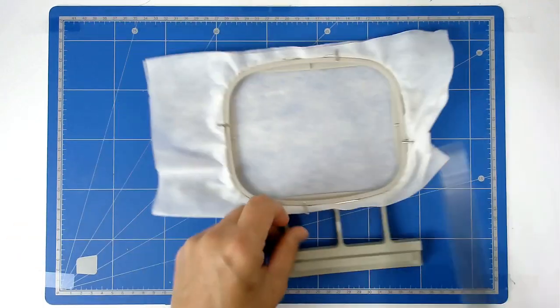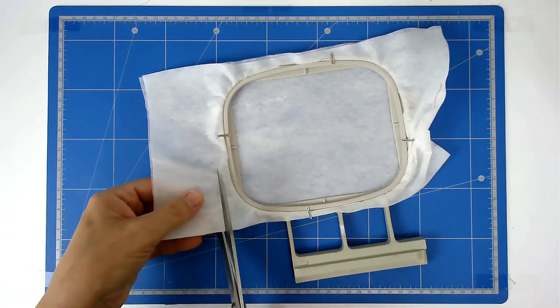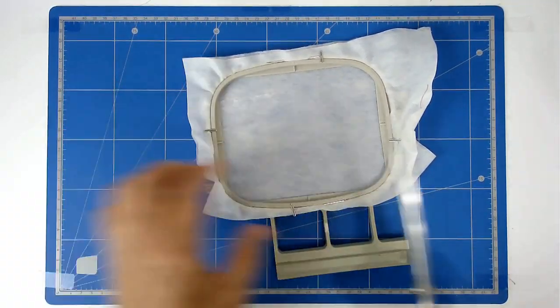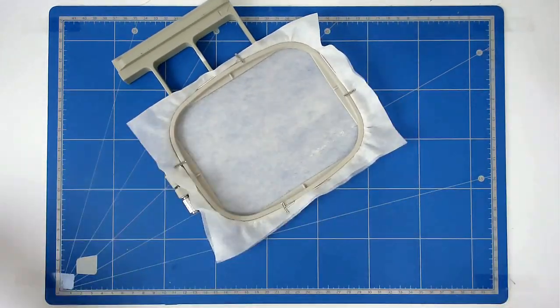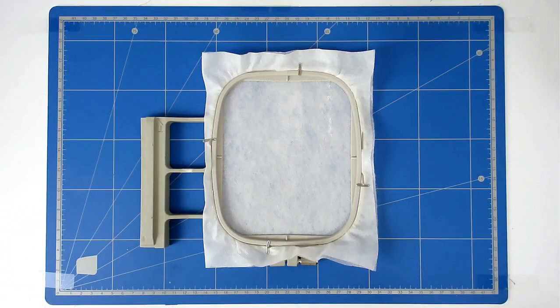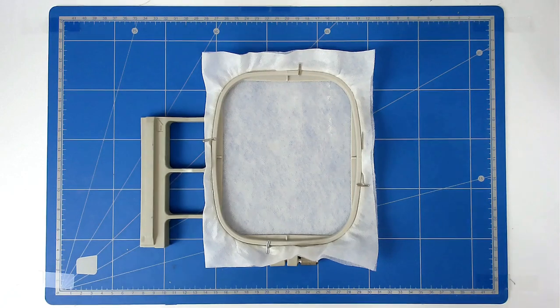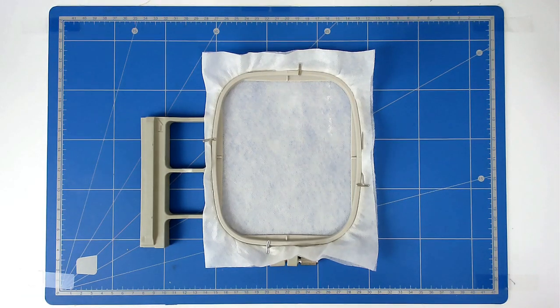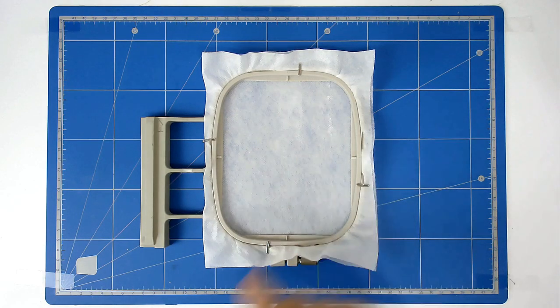I'm just going to trim this off so there's not too much excess. Load your file into your machine along with your matching bobbin and thread, and then you're going to stitch round number one. That's going to give you the placement outline for your batting.